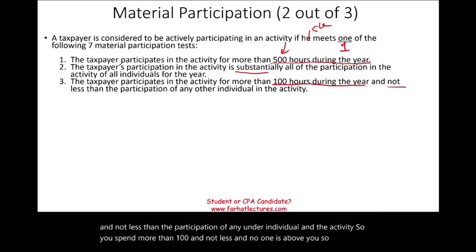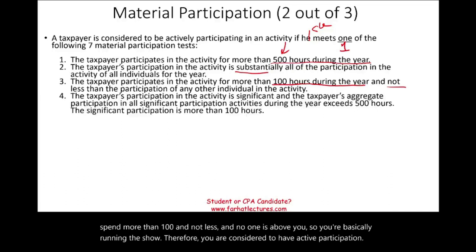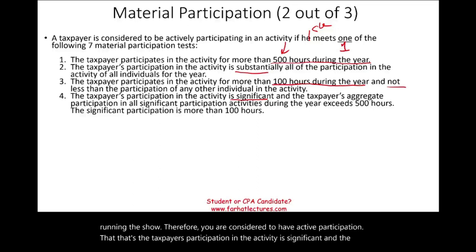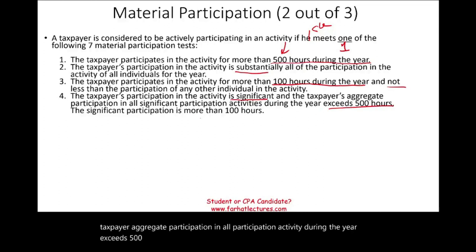Test four: the taxpayer's participation in the activity is significant, and the taxpayer's aggregate participation in all significant participation activities during the year exceeds 500 hours, with significant participation being more than 100 hours. So 100 hours of heavy-duty work and a total of 500 across all activities.